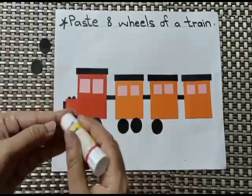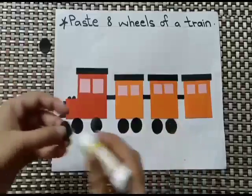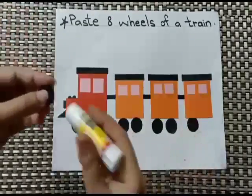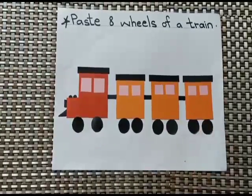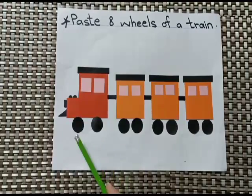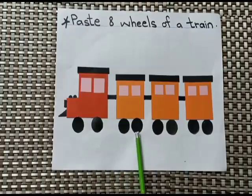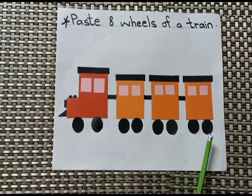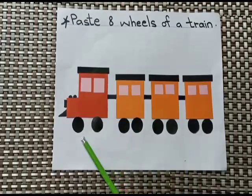Did you like this activity? Very good! Only one wheel is left now. After pasting we will count them all. Count with me: one wheel, two wheels, three wheels, four wheels, five wheels, six wheels, seven wheels, eight wheels — completed! This is a complete train!